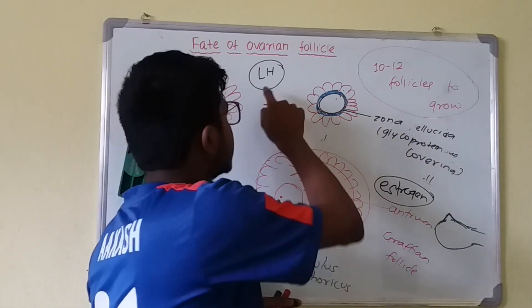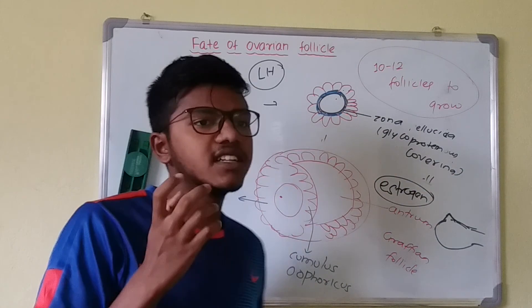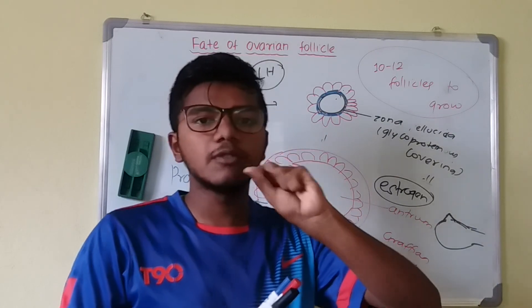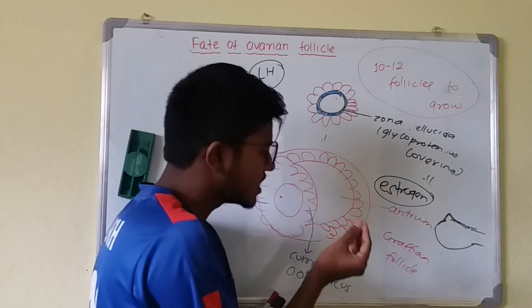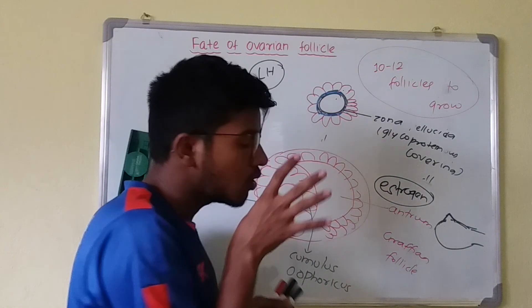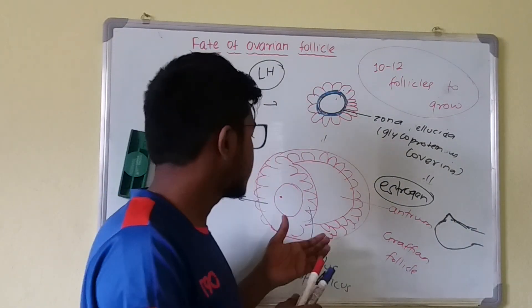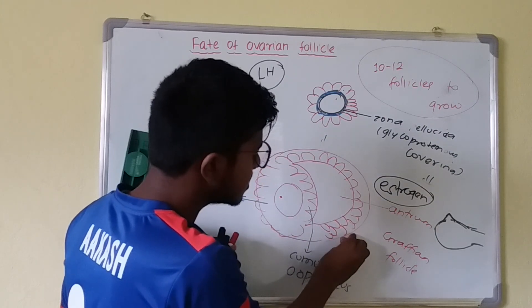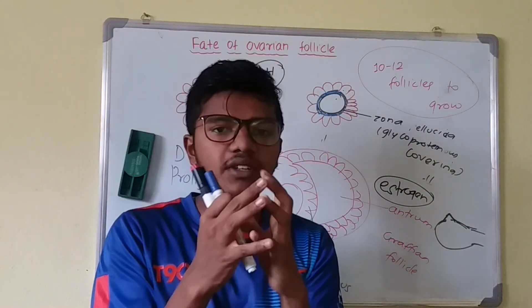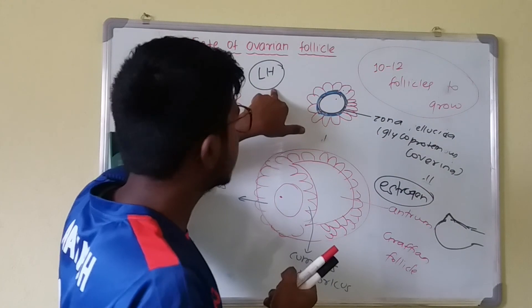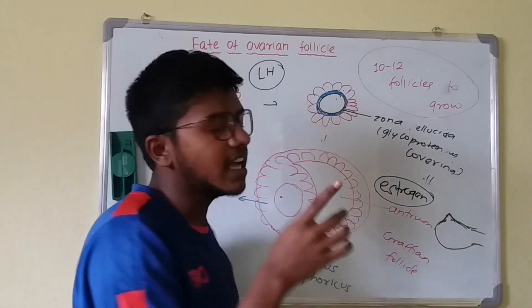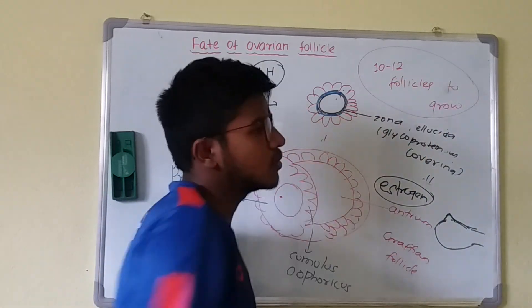Normally the follicular cells secrete estrogen, but LH — luteinizing hormone — causes the follicular cells to secrete progesterone instead. Progesterone has proteolytic properties, meaning it digests the collagen protein on the wall of the ovarian follicle, making it thin. There is also increased plasma flow into the follicle, raising internal pressure, leading to rupture — occurring 16 hours to 2 days prior to ovulation.